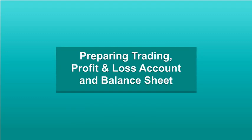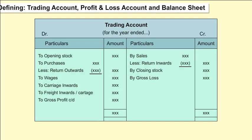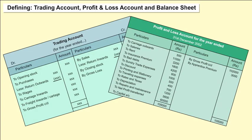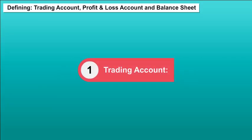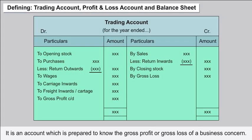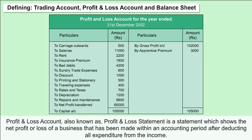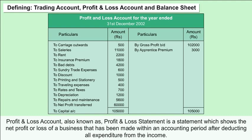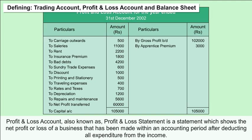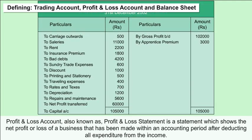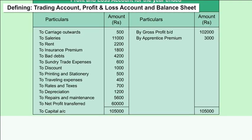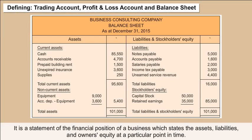Preparing trading, profit and loss account, and balance sheet: A trading account is prepared to know the gross profit or gross loss of a business concern. A profit and loss account, also known as a profit and loss statement, shows the net profit or loss of a business made within an accounting period after deducting all expenditure from income. A balance sheet is a statement of the financial position of a business which states the assets, liabilities, and owner's equity at a particular point in time.